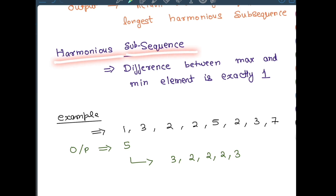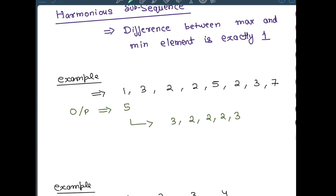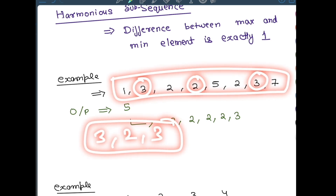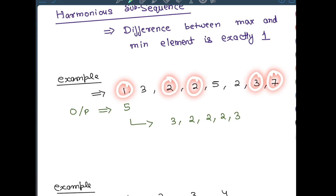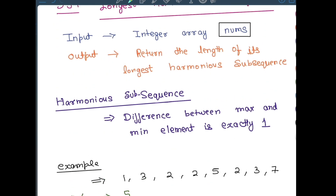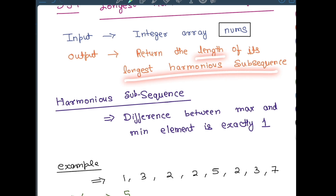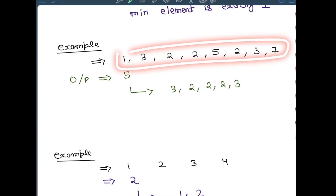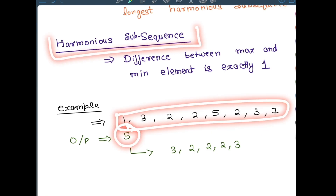You need to find a harmonious subsequence out of it. A subsequence means you can select any elements of your array in the same left-to-right order. For example, [3, 2, 3] is a harmonious subsequence of the given array. What we need to find is the longest harmonious subsequence and return its length. For the given input the output is 5, meaning there is a subsequence of length 5 that is a valid harmonious subsequence.